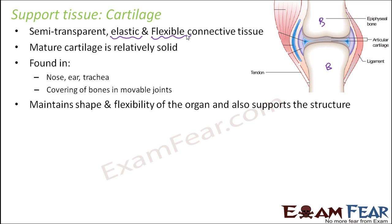Cartilage is found in the nose, ear, and trachea. If you touch the tip of your nose you feel a small bone-like structure, but it is softer than bone — you can move it here and there. It acts as a covering of bones in movable joints. Since bone is extremely hard and not flexible, having a covering of something comparatively elastic and flexible gives a cushion-like feeling to the bone and protects it. Cartilage maintains the shape and flexibility of the organ and also supports the structure.